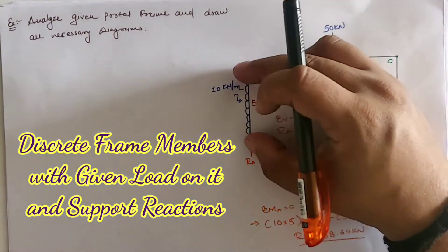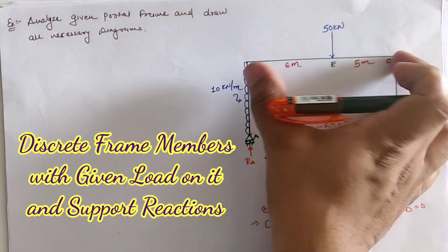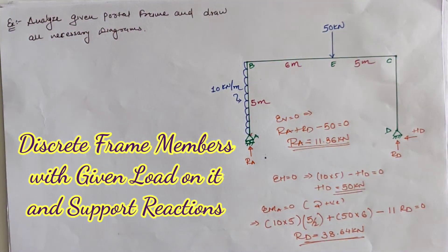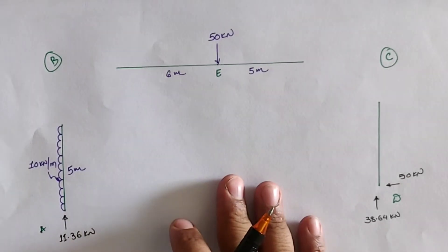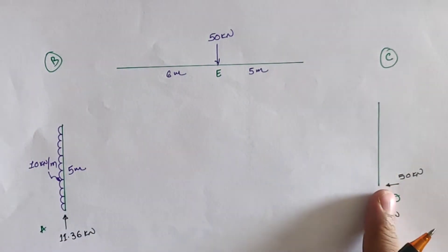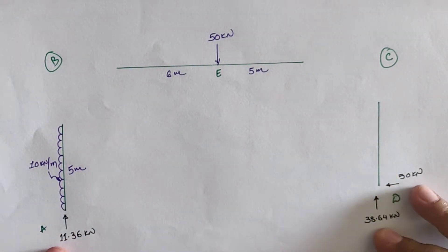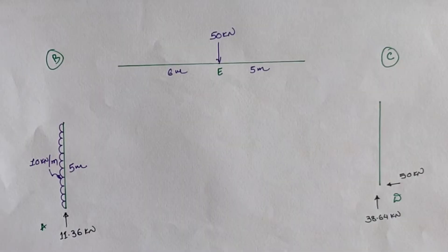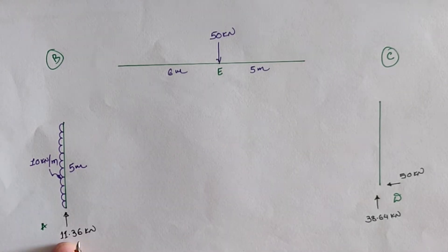We split the frame into member AB (column), member BC (beam), and member CD (column), as shown with the loading on each member and the support reactions. We then analyze all members using sigma H, sigma V, and sigma M at different locations.